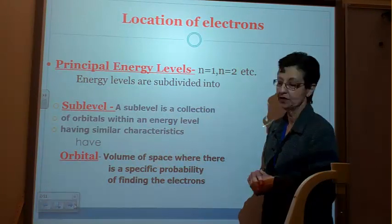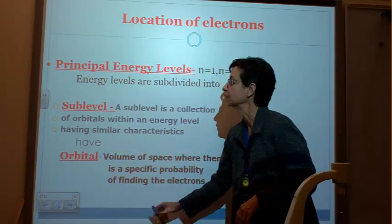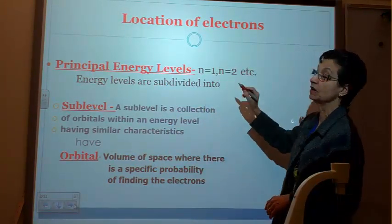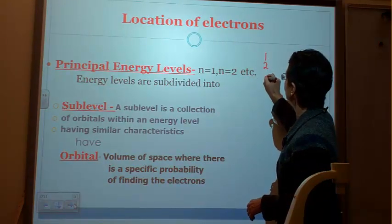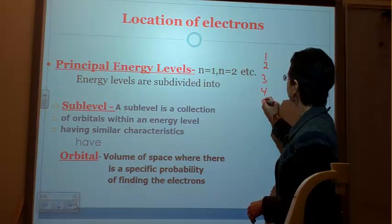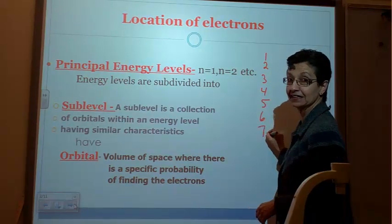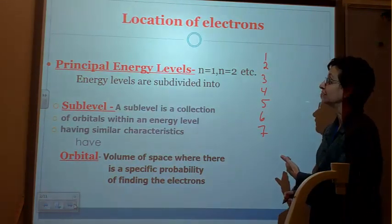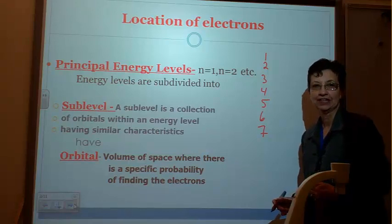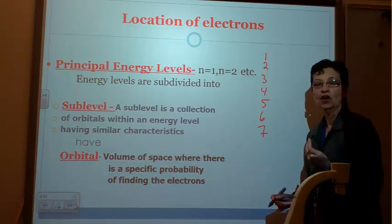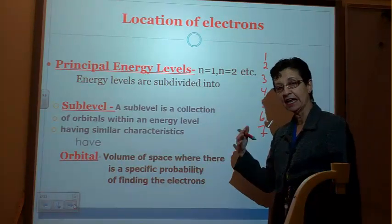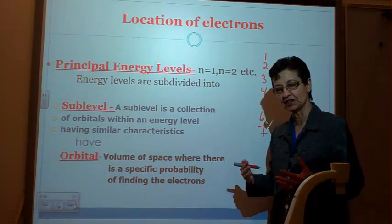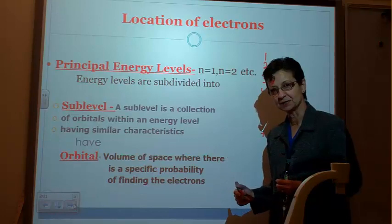The first thing we need to know is what is the principal quantum number. The principal quantum numbers are n equals 1, and it goes 1, 2, 3, 4, 5, 6, and finally 7. So there are 7 principal energy levels, also called principal quantum number. Pause and write down the definitions so you can focus on the explanation.